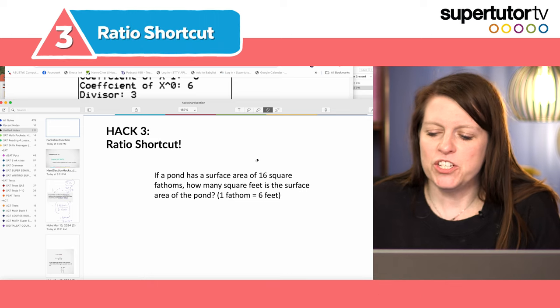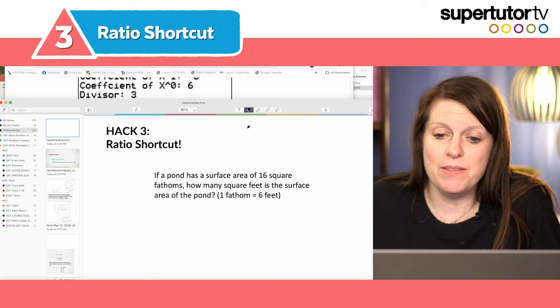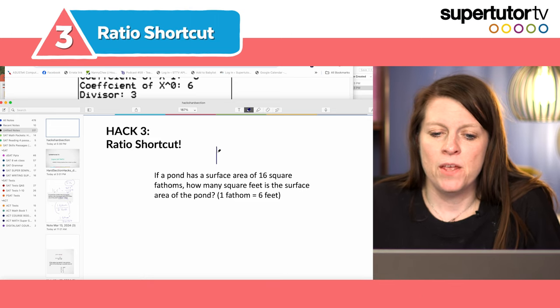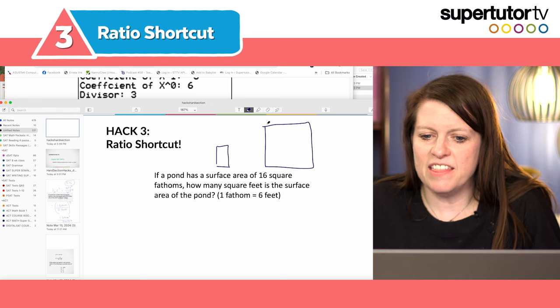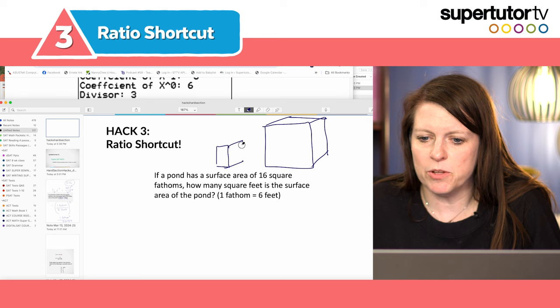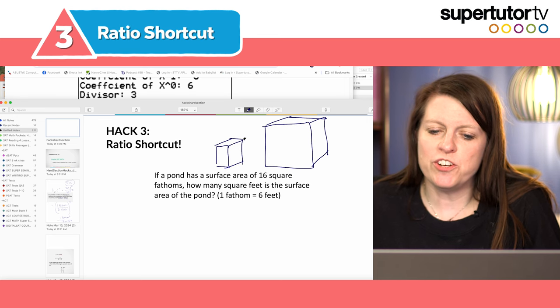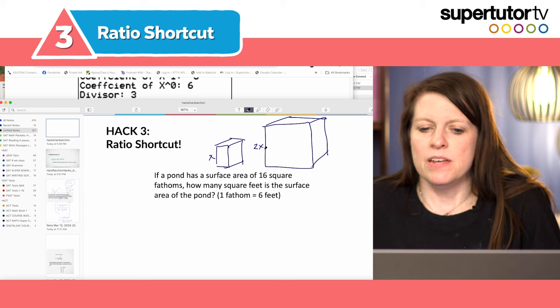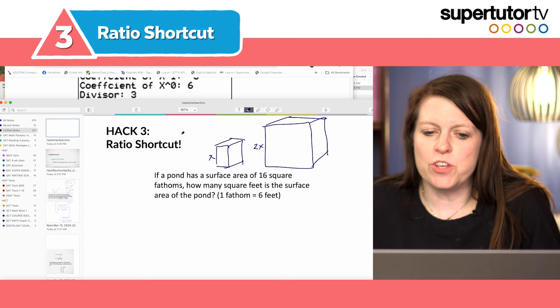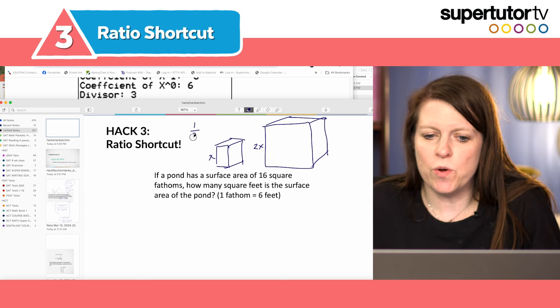Third hack ratio shortcut. So if you don't know this shortcut you should and the basic idea is that if I have a single dimension of something right and that's in some ratio to another dimension of a similar something we can go between ratios. So here let's say that this side is x and this side is 2x. If I want the ratio of the volume of these two cubes all I do is I take that ratio one to two and I cube it right and that gives me one to eight is the volume ratio right.